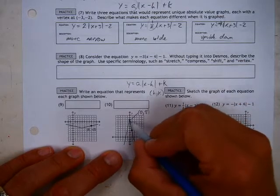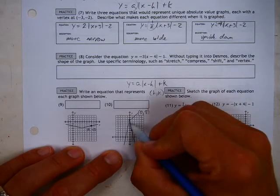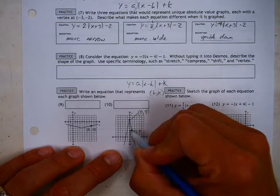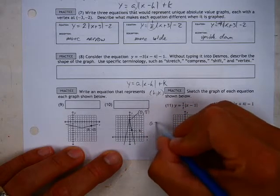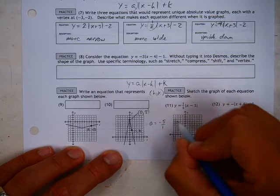But before I do that I'm going to look at the slope, and from here we're going to go down 1, 2, 3, 4, 5, and over 1. So my a value is equal to negative 5 over 1.